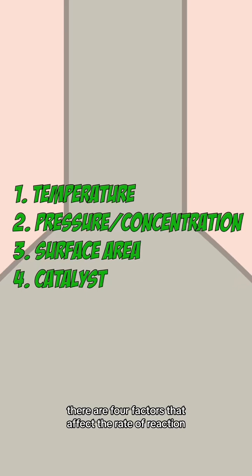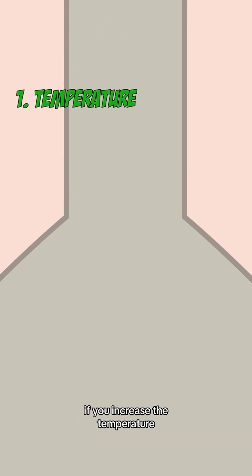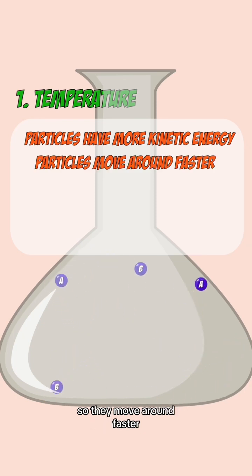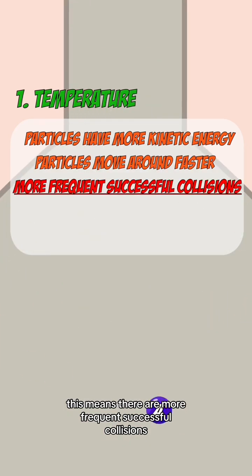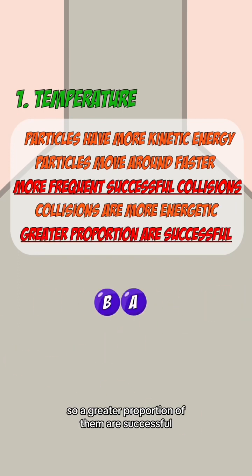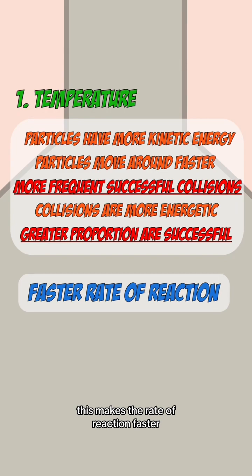There are four factors that affect the rate of reaction. The first is temperature. If you increase the temperature, the particles have more kinetic energy, so they move around faster. This means there are more frequent successful collisions and the collisions are more energetic, so a greater proportion of them are successful. This makes the rate of reaction faster.